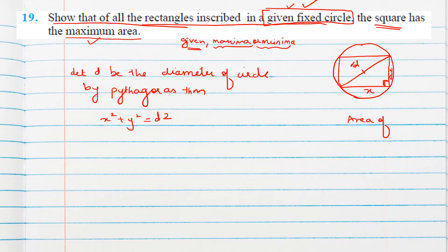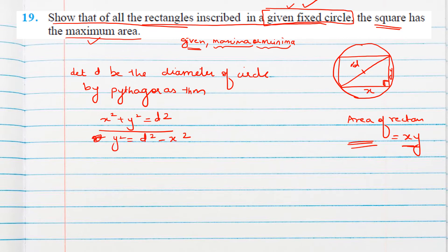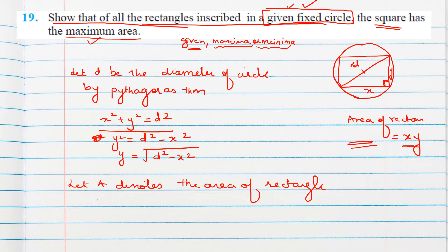The area of the rectangle is x × y. This is our function, but it is in a two-variable case, so we have to make it one variable. From the equation x² + y² = d², we write y² = d² − x², so y = √(d² − x²). Let A denote the area, so A = x·y.